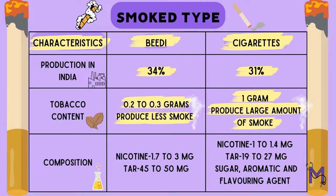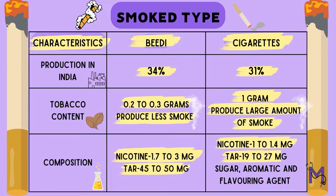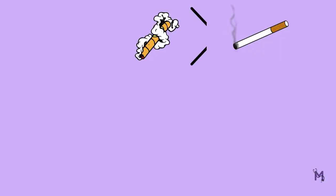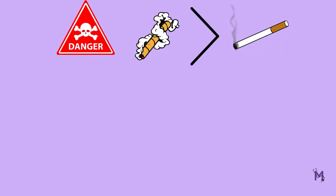Based on their composition, BD has 1.7–3 mg of nicotine and 45–50 mg of tar. In the case of cigarettes, 1–1.4 mg of nicotine and 19–27 mg of tar along with sugar, aromatic and flavouring agents are present. Among the two, BD is considered to be more dangerous, leading to severe adverse effects.